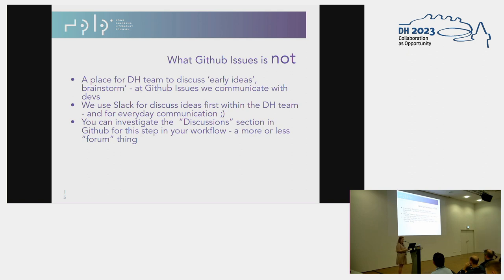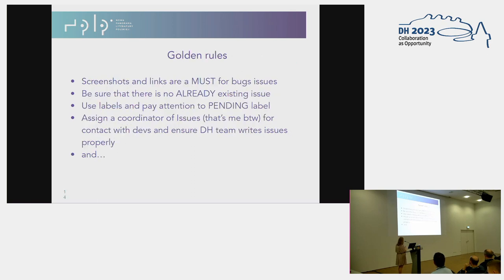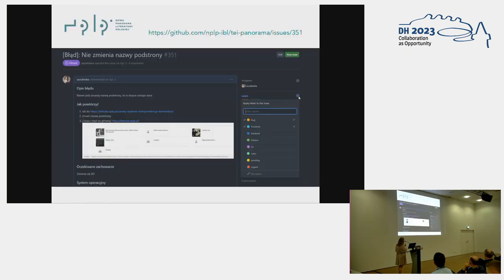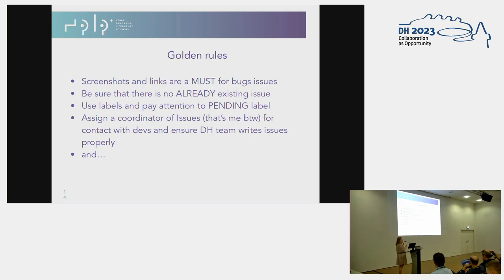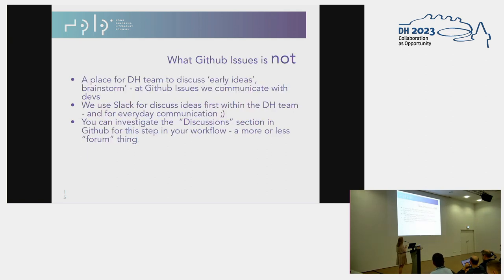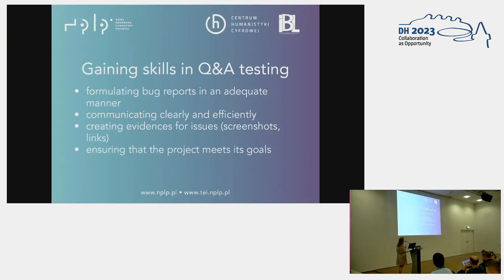There is a Discussion section in GitHub if you want a place for brainstorming. We could use it — it won't be seen by developers unless they look there — but for very early concepts and discussions, it's not GitHub Issues. Developers can comment on issues too, but that's for more developed ideas.